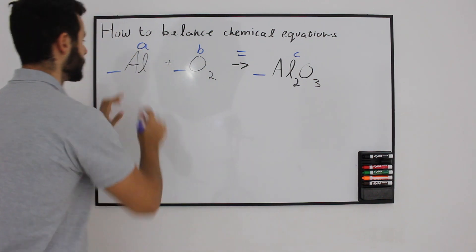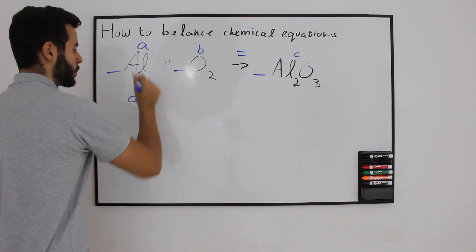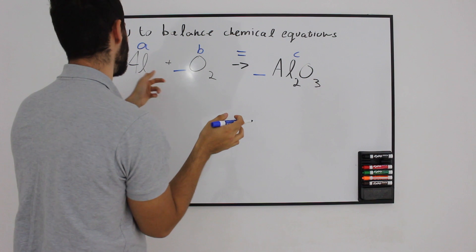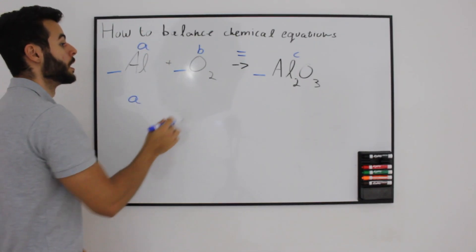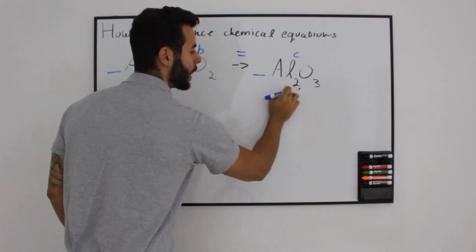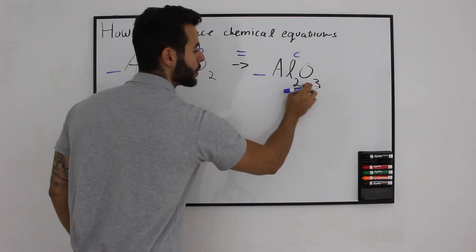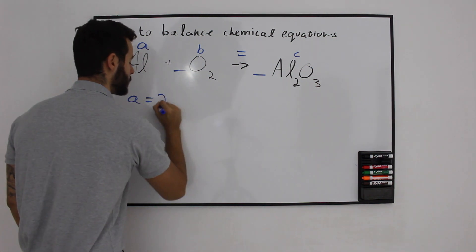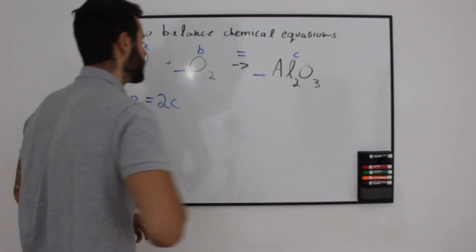We have on this side 1A, because we have 1 aluminium and we abbreviate it using the letter A. On the other side, we have 2 aluminiums. So A equals 2 times C, or A equals 2C.